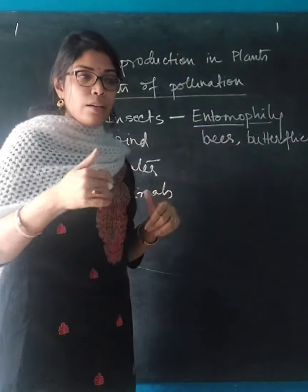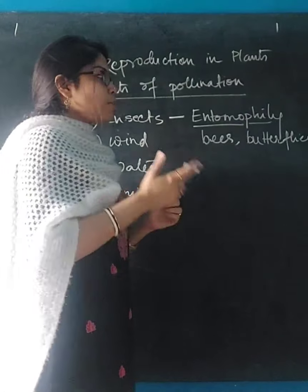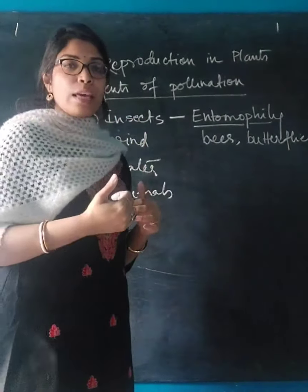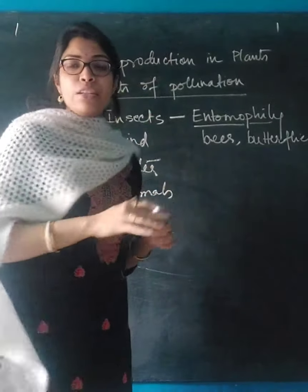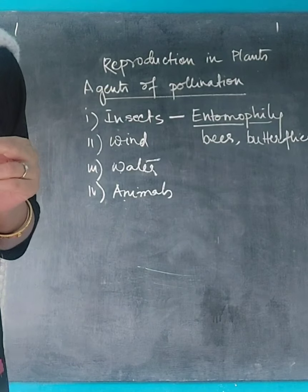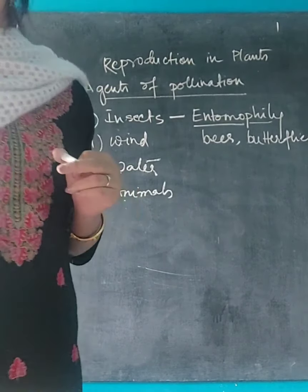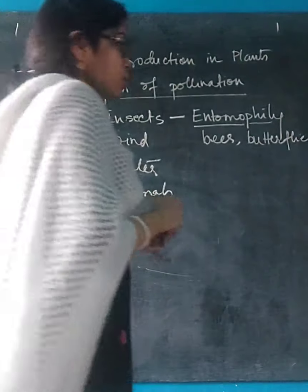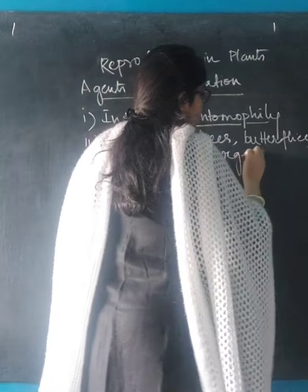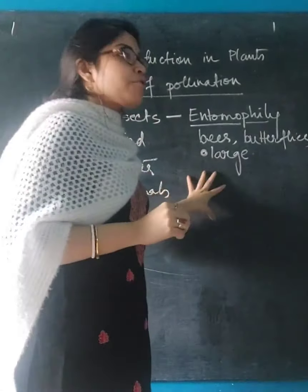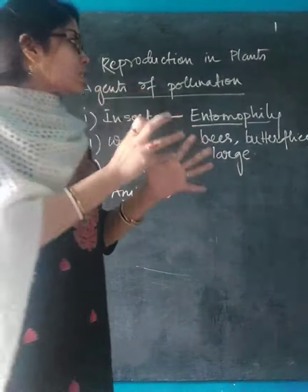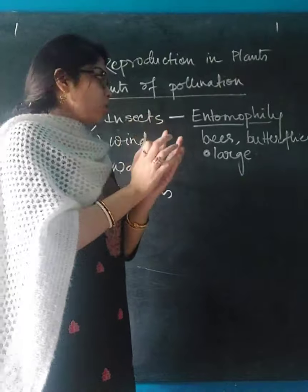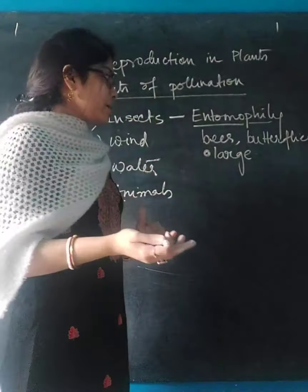The same happens for butterflies — pollen grains get stuck on their legs or antennae. When they visit a different female flower, they carry the pollen grains along with them and deposit those pollen grains on the stigma of that flower. Flowers pollinated by insects are large, because insects need space to come and sit. If the flower is very small with a tiny opening, insects won't be able to sit and pollination won't take place.